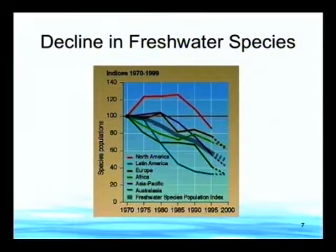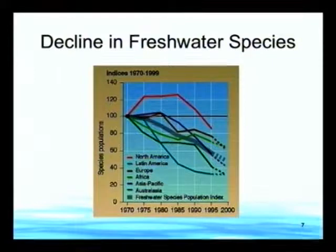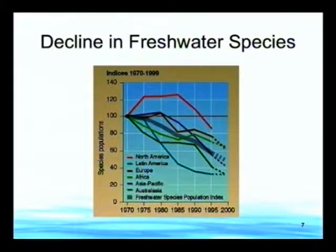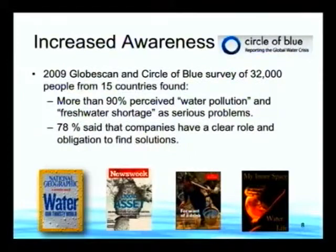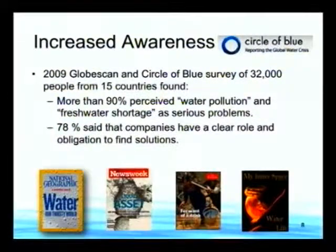There is a recognized significant decline in freshwater species. A chart showing data from 1970 to 2000 across a number of continents shows a clear downward trend, and we're losing charismatic species like freshwater dolphins in the Indus River. This is what brings NGOs like the Nature Conservancy and World Wildlife Fund into the water space. A recent survey found that more than 90% of respondents perceived water pollution and freshwater shortage as serious problems, and almost 80% said companies have a clear role and obligation to find solutions.